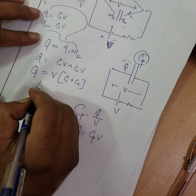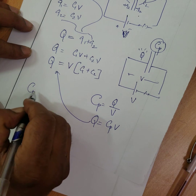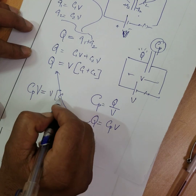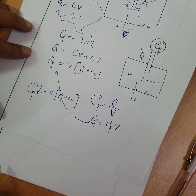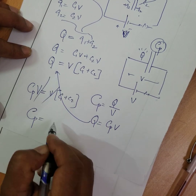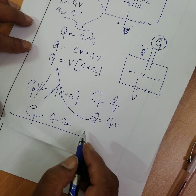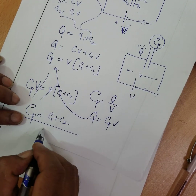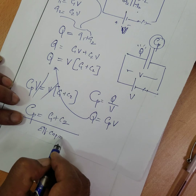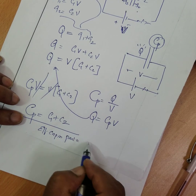Since Q equals Cp times V, substituting into our earlier result: Cp times V equals V times the quantity C1 plus C2. The V cancels on both sides, therefore Cp is equal to C1 plus C2. This means the effective capacitance in parallel is equal to the sum of the individual capacitances.